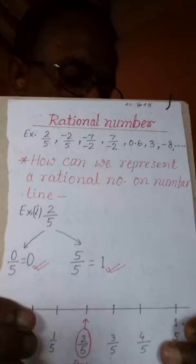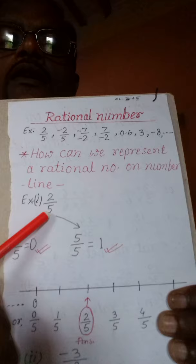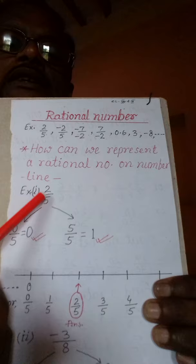तो चलिए, हम आज की class में ये देखेंगे कि किसी rational number को number line पर represent कैसे करते हैं, और उसके लिए मैंने एक example लिया है जो आपके सामने screen पर दिख रहा है। मैंने example जो लिया है वो है 2 by 5 — एक rational number है — और हम इसे कैसे represent करेंगे।